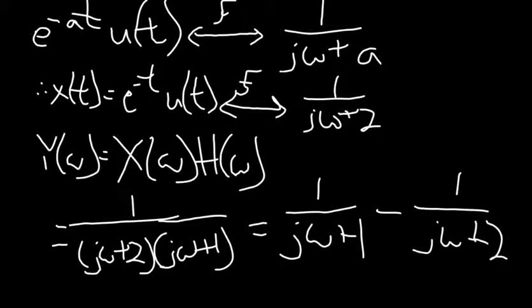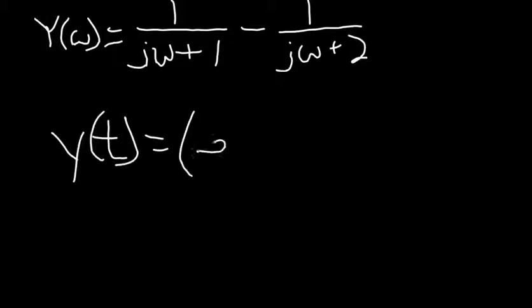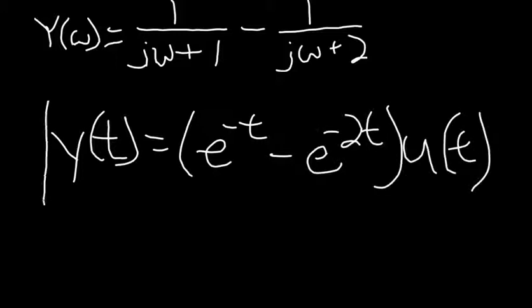At the end of this video I will have a detailed explanation of the partial fractions. Using Y(ω) and the property given on the previous slide, we can calculate that y(t) equals e^(-t) minus e^(-2t), all times u(t).